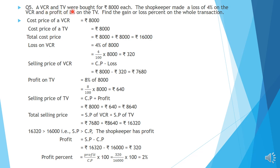Question number 5. A VCR and TV were bought for Rs. 8,000 each. The shopkeeper made a loss of 4% on the VCR and a profit of 8% on the TV. Find the gain or loss percent on the whole transaction. CP of VCR is Rs. 8,000 and CP of TV is Rs. 8,000. Total cost price is Rs. 8,000 plus Rs. 8,000 equals Rs. 16,000.